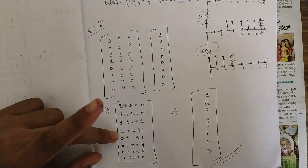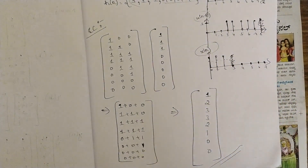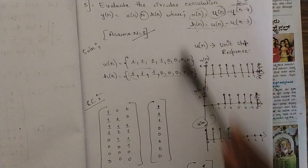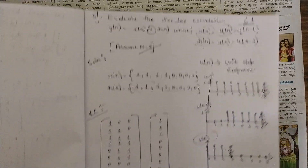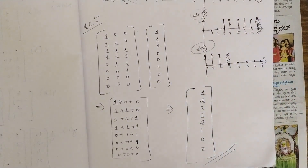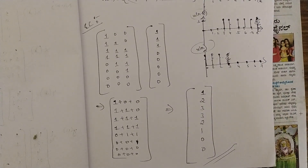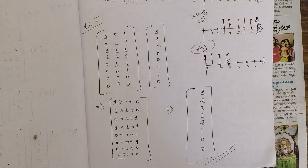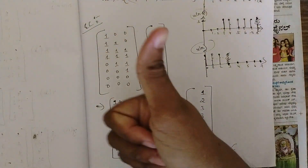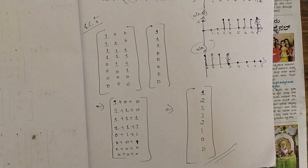This is the final sequence of circular convolution. Whenever questions involve unit step response, solve them in this way. I have solved 2 important kinds of problems based on circular convolution: one using unit sample response δ(n) and one using unit step response u(n), where the sequence is not given directly. Please like this video and share it. Thank you!